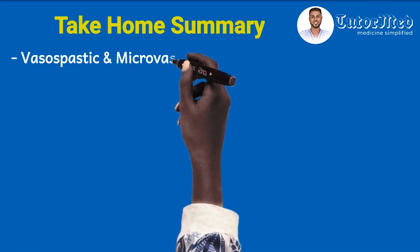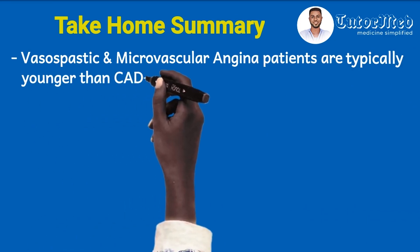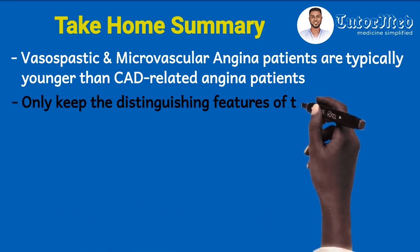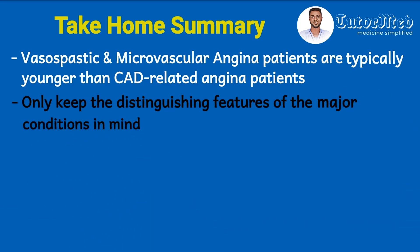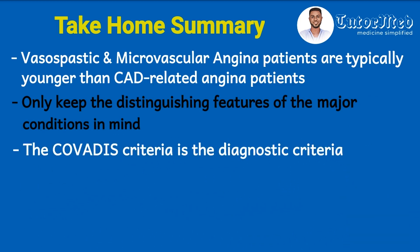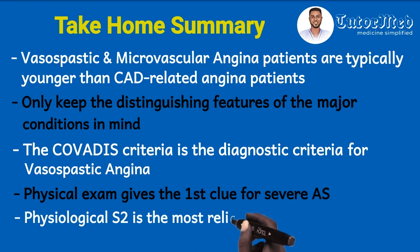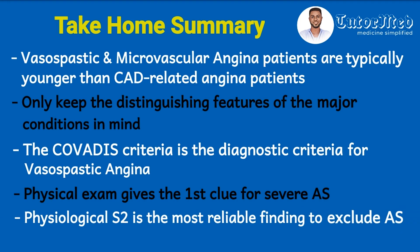Key summary points: (1) Vasospastic and microvascular angina patients are typically younger than coronary artery disease-related angina patients. (2) Because ischemic heart diseases share similar characteristics, only keep the distinguishing features of each major condition in mind. (3) The COVARIATES criteria is the diagnostic criteria for vasospastic angina. (4) The symptoms of severe aortic stenosis are non-specific, so physical exam gives the first clue. (5) Physiological splitting of the second heart sound is the most reliable finding to exclude aortic stenosis as a cause of chest pain in adult patients.